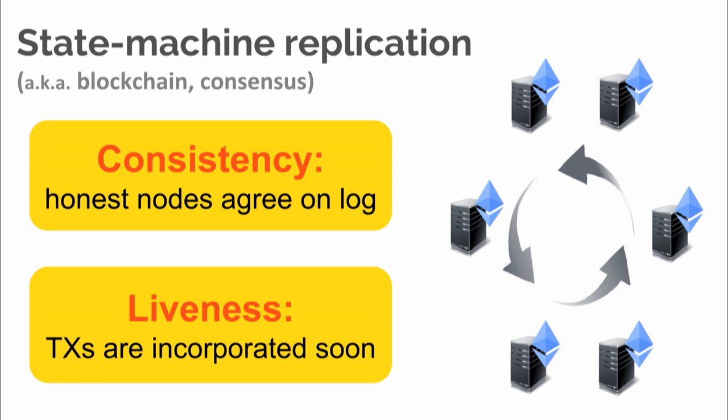There are two important security properties that we care about: namely consistency and liveness. Consistency says that all of the honest nodes must have the same view of the log. Maybe your network can be a little faster than mine and your log progresses a little bit faster, but at the end of the day we have to have the same view. Liveness says whenever I buy coffee, this transaction has to enter all of the honest nodes' logs fairly quickly.